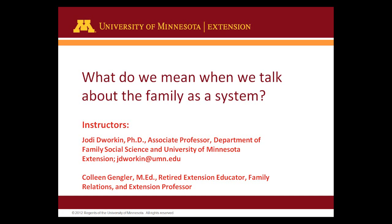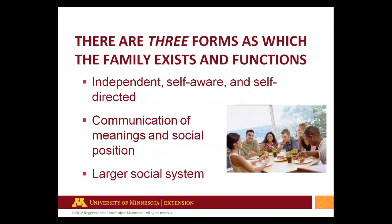So what do we mean when we talk about the family as a system? The basis of family systems theory is that there are three forms in which the family exists and functions. First, every family member is independent, self-aware, and self-directed. Some cultures may not value independence, so it may help to think of this as a continuum. There are degrees of independence, and certainly every individual has some degree of being self-directed, even if it's just in thought and not in action.